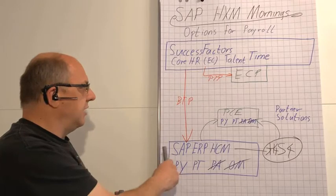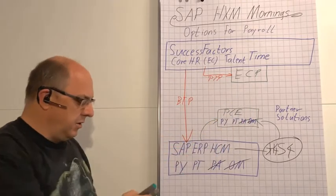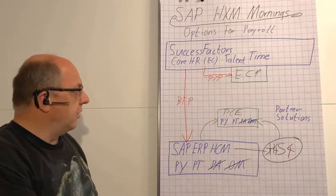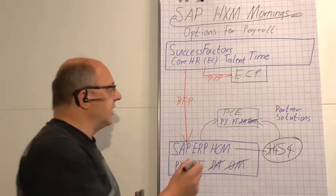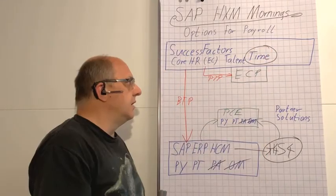It doesn't make for good architecture. I would not recommend that. So if you're using Employee Central Payroll, time needs to come from somewhere else. One good option is that time tracking functionality in SuccessFactors, and it's going to be growing a lot.